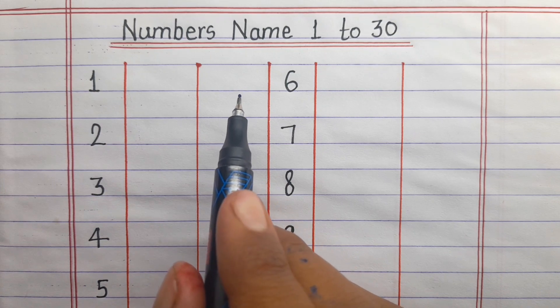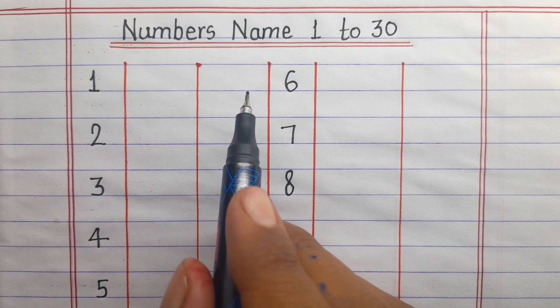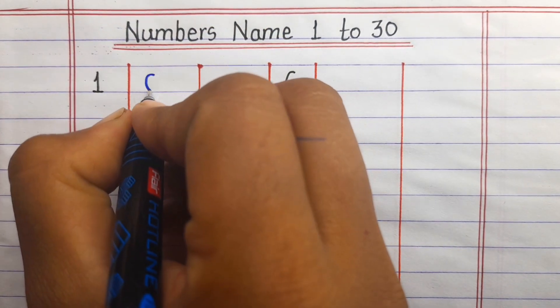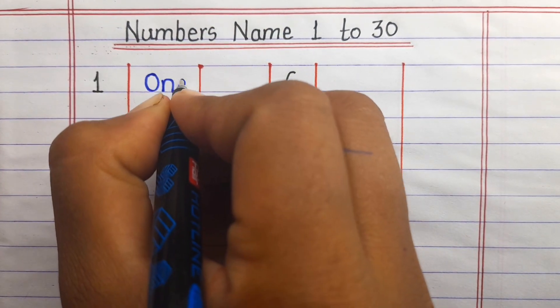Hello friends, welcome back to our channel. Today we will learn numbers name 1 to 30 in English and Hindi. So let's start. 1,